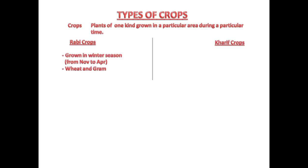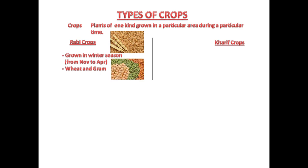Rabi crops are grown in the winter season, from November to April. Examples of Rabi crops are wheat and gram. You can see pictures of wheat and gram.